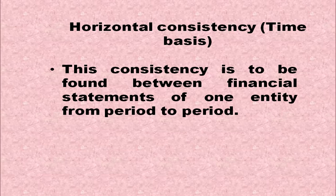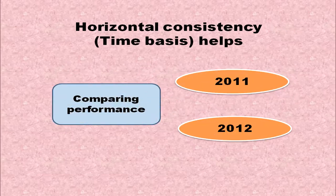Horizontal consistency is found between financial statements of one entity from one period to another. It helps in comparing the performance of different years — for example, comparing the performance of 2011 and 2012.